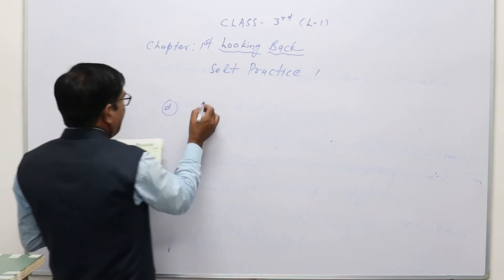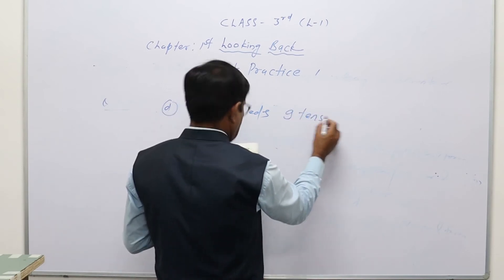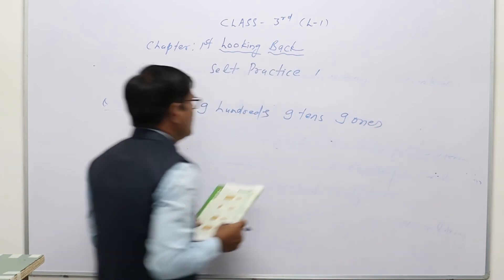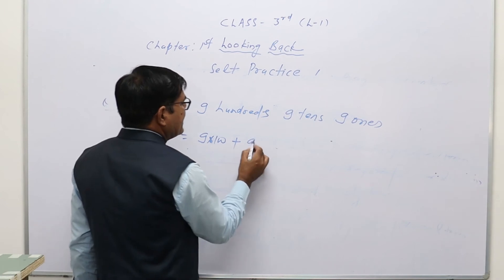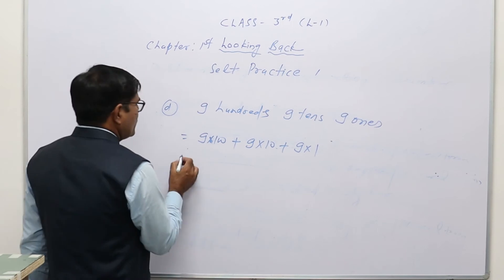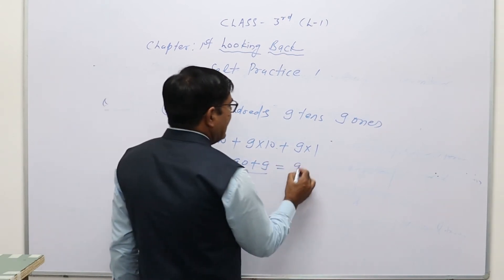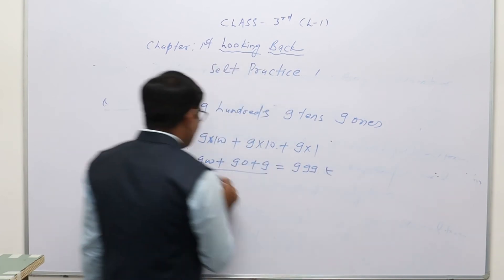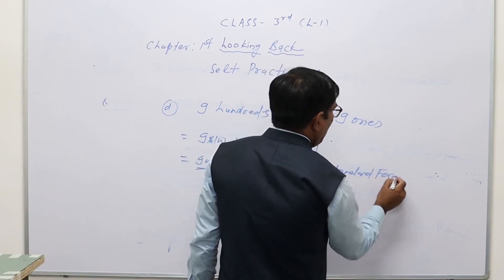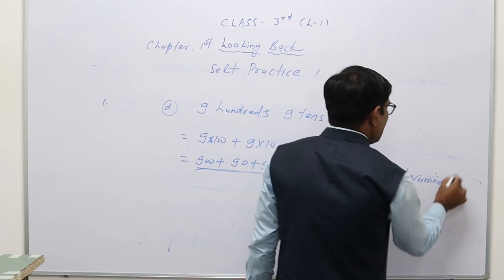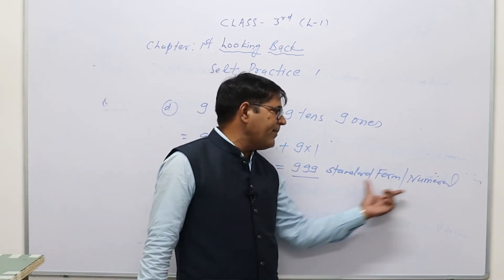Question d: 9 hundreds, 9 tens, 9 ones. In expanded form: 9 × 100 + 9 × 10 + 9 × 1 = 900 + 90 + 9. The standard form is 999. This is the expanded form, and 999 is the standard form or numeral form.